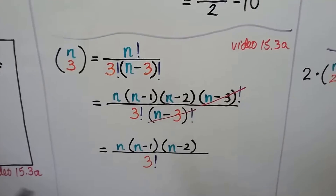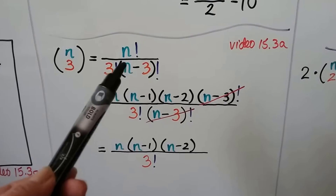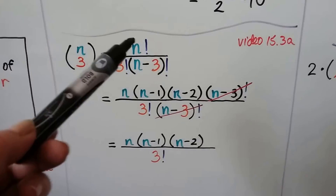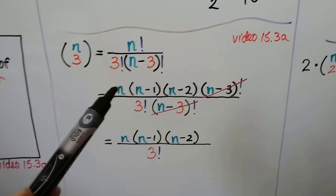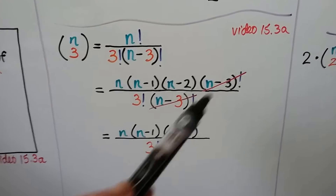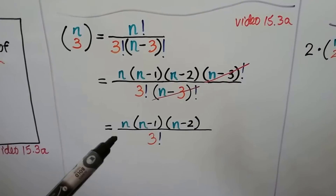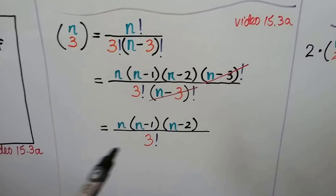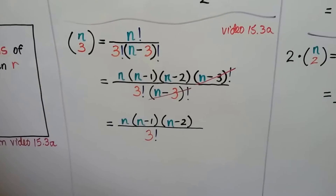For n choose 3, we'd have n factorial over 3 factorial, and then n minus r would be n minus 3. We can expand the n factorial to have a factor of n minus 3 factorial: n times n minus 1 times n minus 2 times n minus 3 factorial. We cancel the common factorials, and what we're left with when simplified is n times n minus 1 times n minus 2 divided by 3 factorial.